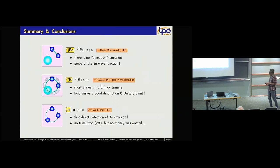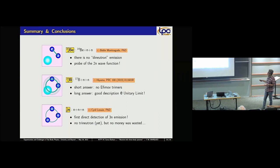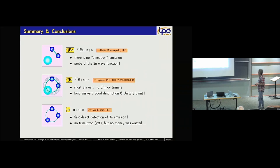In conclusion: for beryllium-16, there is no di-neutron emission — we have a complex three-body decay — and we have probed the two-neutron wave function with our colleagues' help. For Efimov trimers in boron-19, there are no trimers but the system is well described at the unitary limit. For the three-neutron system, we have for the first time detected three neutrons in a three-neutron decay; we don't have a trineutron signal yet, but at least we didn't waste money looking for it.